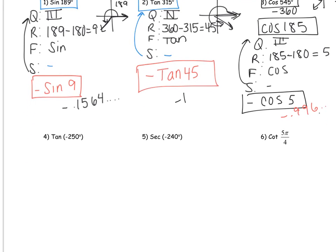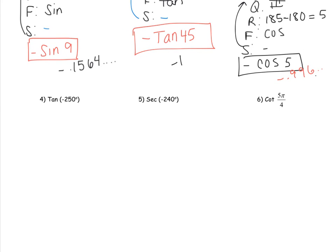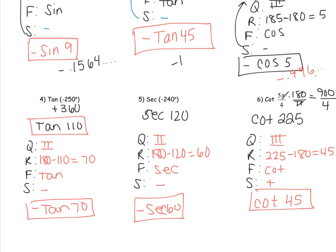Let's see if you can try numbers 4, 5, and 6 on your own. Remember, your angle needs to be between 0 and 360 first, so you may need to find a coterminal angle. Here are the answers: for number 4, negative 250 plus 360 gives the coterminal angle 110. That's quadrant two; the reference angle is 70 and the function is tangent. In quadrant two, tangent is negative, so the answer is negative tan of 70. All three equivalent forms should match.